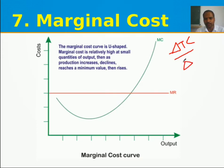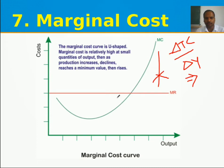The marginal cost (MC) is found using the formula ΔTC ÷ ΔY. In your exercises, if the value goes below zero you do not plot those points — only positive values are plotted. The MC curve is U-shaped: it is relatively high at small quantities of output, then as production increases it declines to a minimum value, and then rises again.